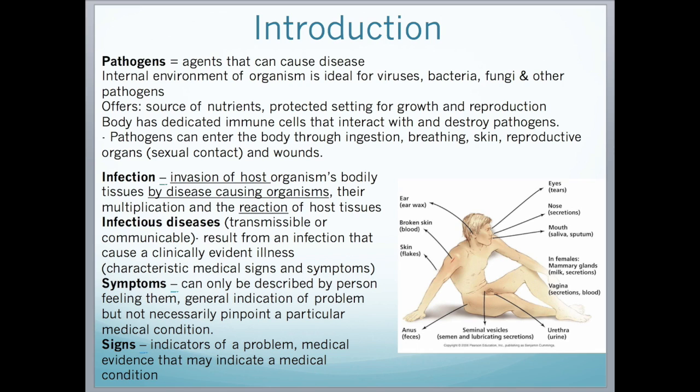Pathogens are agents that can cause disease. They can enter our body, and the internal environment of an organism is ideal for viruses, bacteria, fungi, and other pathogens because it offers a source of nutrients and a protected setting, which allows the pathogen to grow and reproduce. The body has dedicated immune cells that interact with and destroy pathogens.